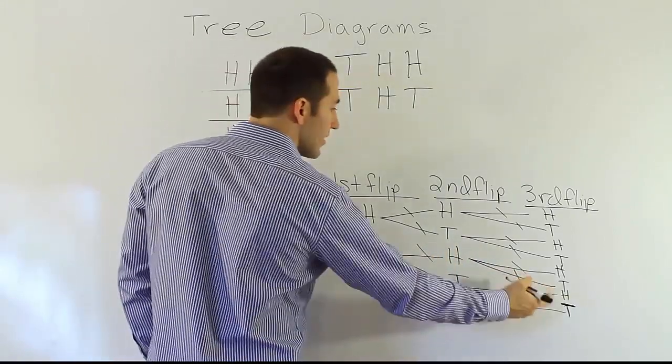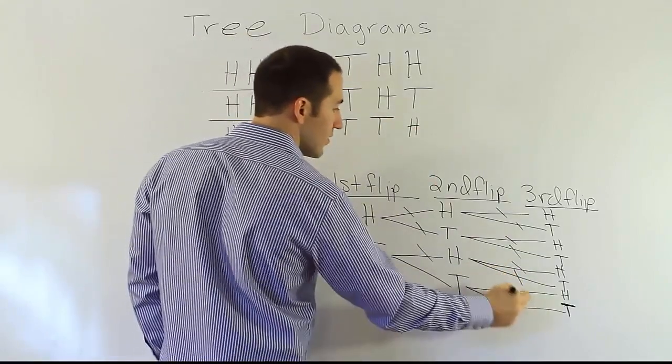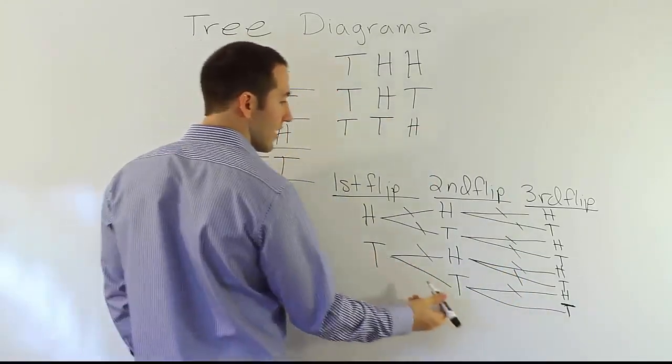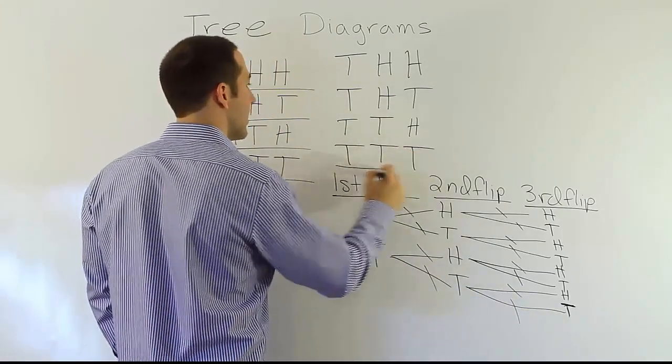Then we could go tails, tails, heads. Tails, tails, heads. We could use up that branch, and then tails, tails, tails. At that point we could use up all of them. And there it is.